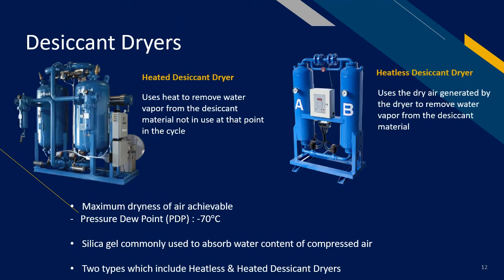Moving on to desiccant dryers, also known as absorption method dryers. These dryers use desiccant — typically silica gel — to absorb the water content of compressed air. These desiccant dryers can achieve a maximum dryness of minus 70 degrees Celsius pressure dew point, because the method of drying is by absorption. There are two major types: heated type and heatless type. Heated desiccant dryers use heat to remove water vapor from the desiccant material, while heatless desiccant dryers use the dry air generated by the dryer to remove water vapor from the desiccant material.